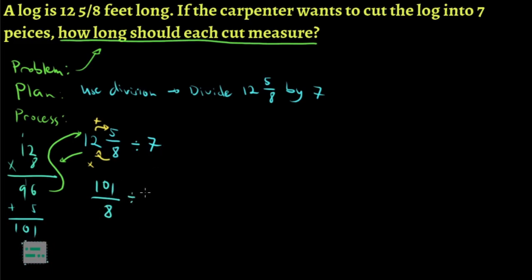Then we divide by 7, which is a whole number. It might help to remember that all whole numbers actually have a denominator of 1. And with that, we can proceed with the steps we know for dividing fractions. The first step is to find the reciprocal of the divisor. This is our divisor, so we just flip it. Our problem will now be 101 over 8 times 1 over 7.